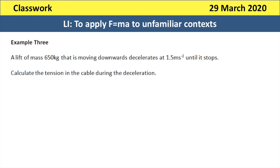Example 3, the first example from the success criteria: a lift or elevator of mass 650 kilograms is moving downwards and decelerates at 1.5 metres per second squared until it stops. We've been asked to calculate the tension in the cable during that deceleration. With elevator problems, it's very important to consider the direction it's moving in and the direction of its acceleration or deceleration. The tension force is acting upwards and the weight is acting downwards. Because it is decelerating, the tension will need to be bigger than the weight of the elevator. So the resultant force will be the tension minus the weight, because the tension has to be the bigger of those forces.